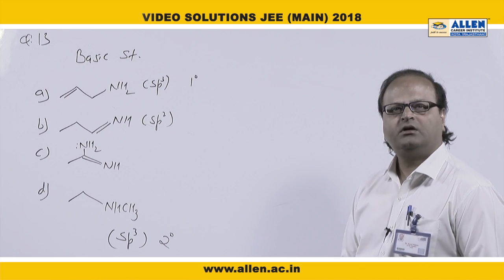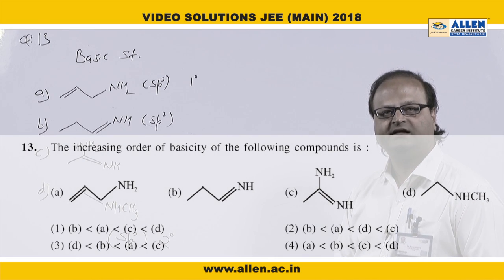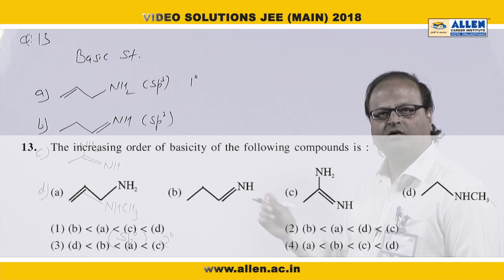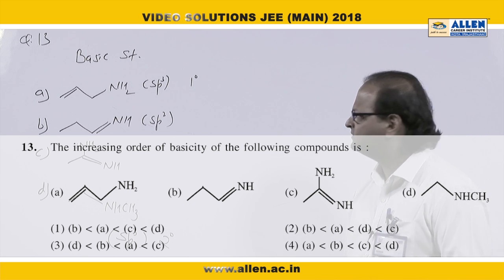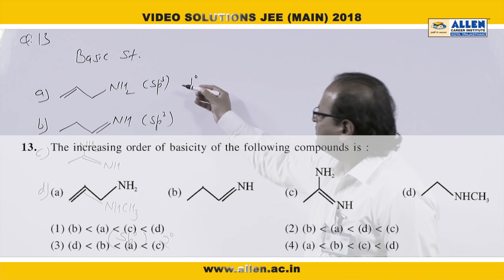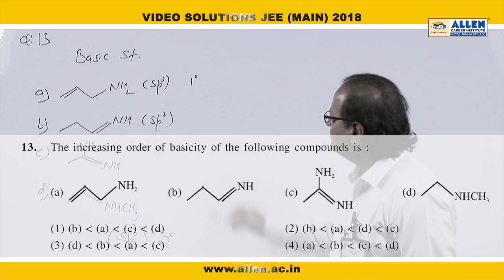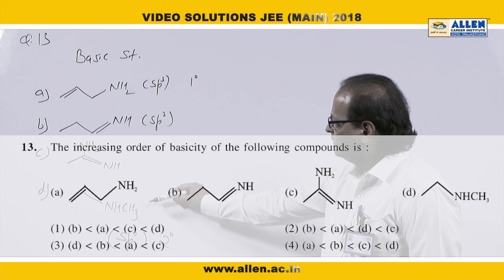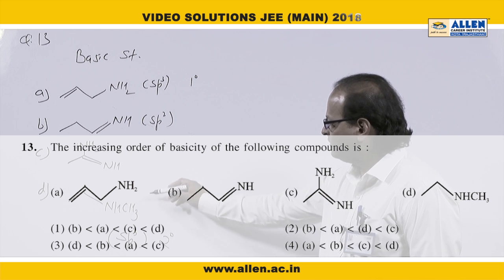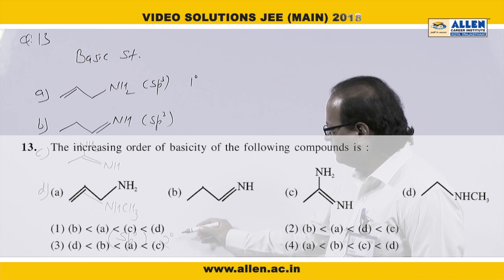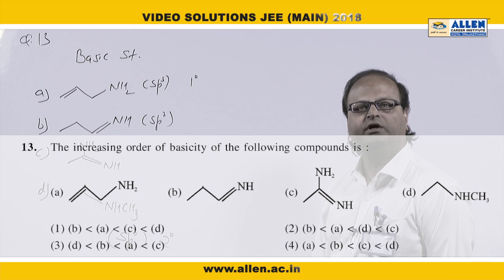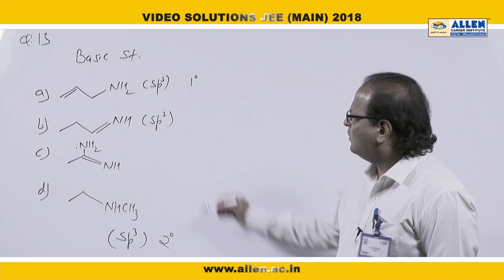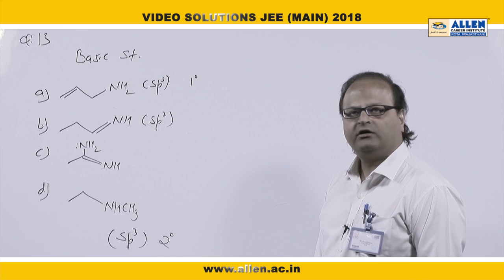Question number 13 is about basic strength. Four different amines are given and the order of basic strength is asked. In option A, the nitrogen is sp3 hybridized and is a primary amine. In option D, the nitrogen is also sp3 hybridized but is a secondary amine — more electron donor — so it will be more basic than option A.